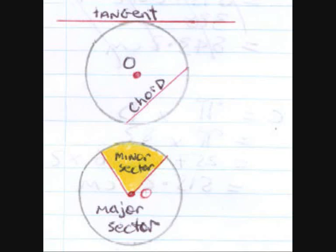Now we have something called sectors. A little bit like sectors on a radar screen for airplanes. You've got the minor sector, the smaller one and the major sector.